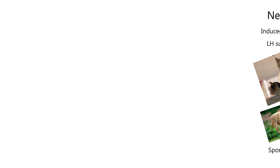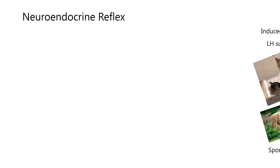I would like to talk about a neural endocrine reflex. Neural means there's a nervous arm traveling on nerves and action potentials. Neural endocrine means a hormone is released into the blood and travels to some distant target tissue.